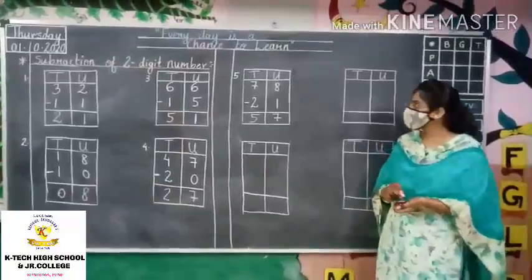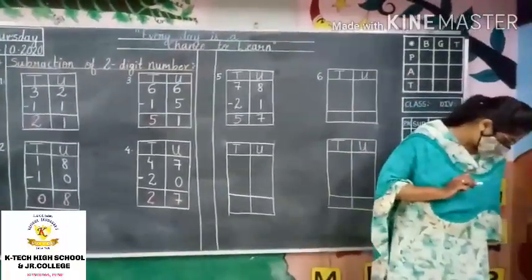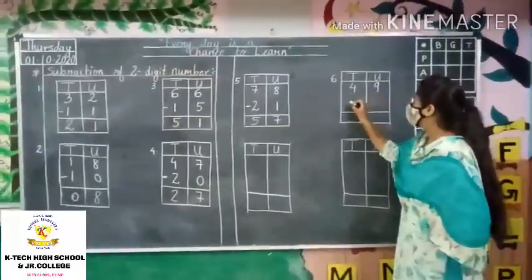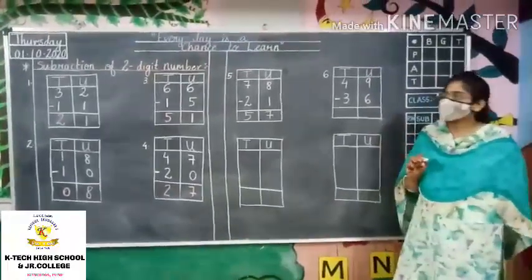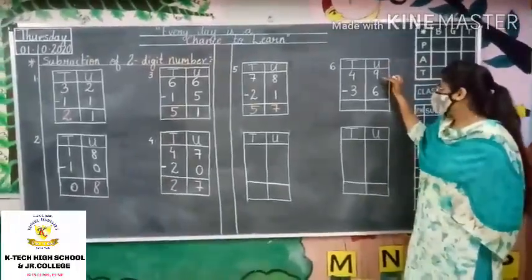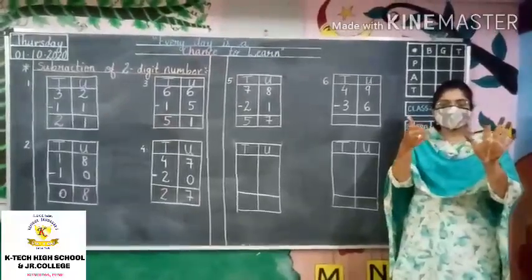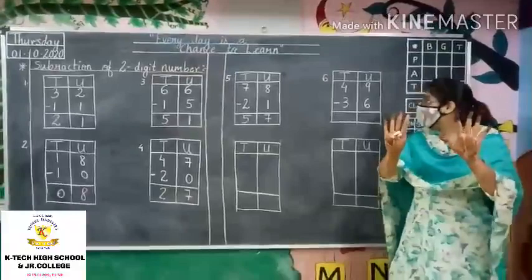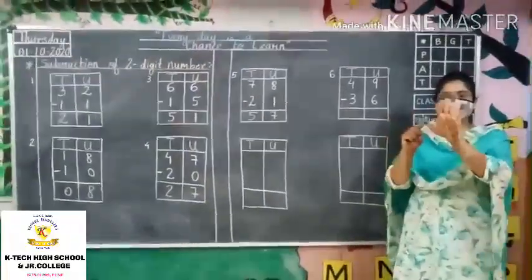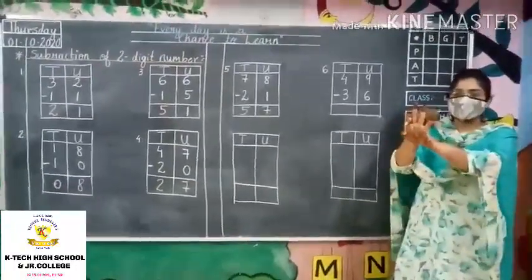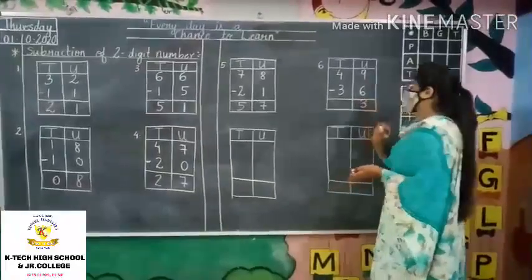Hope you all are understanding. Next question: Question number 6 — 49 minus 36. Again we will start with the units part: 9 minus 6. Remove 9 fingers — 1, 2, 3, 4, 5, 6, 7, 8 and 9. Now minus 6: remove 1, 2, 3, 4, 5 and 6. How many fingers are remaining? 1, 2, 3 and 4. Now go for tens.